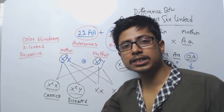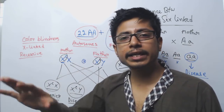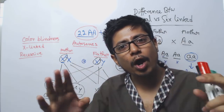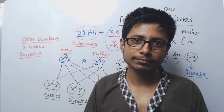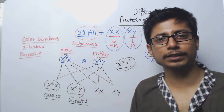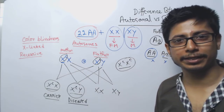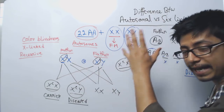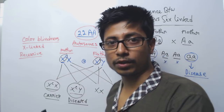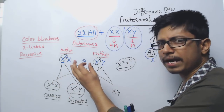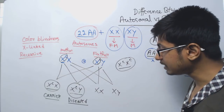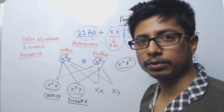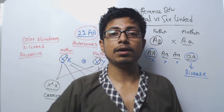X-linked inheritance is never transferred from father to son, because the father gives the son only the Y chromosome. The only X that all men have comes from their mother, not from their father. So if you have any X-linked condition, it is not the father's fault — it is transferred from the mother. When solving pedigree problems for X-linked traits, look for a sex bias with males much more affected, transfer from mother to son, and never from father to son but from father to daughter.